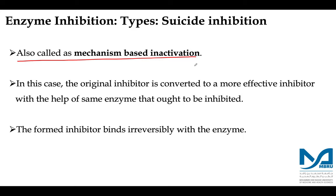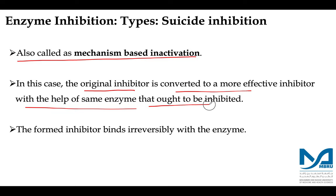Suicide inhibitors are also classified as mechanism-based inhibitors, and the inhibitory mechanism is sometimes described as mechanism-based inactivation. What happens with suicide inhibitors is that the original inhibitor is converted to a more effective inhibitor with the help of the same enzyme that ought to be inhibited. The formed inhibitor then binds irreversibly with the enzyme.